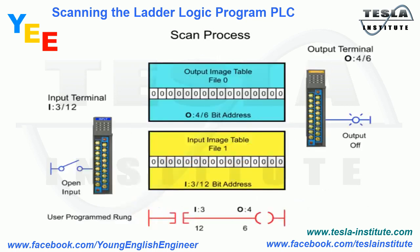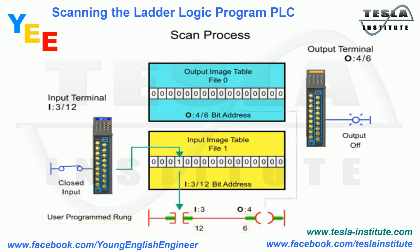The entire scan process is demonstrated further here. When the limit switch is activated, the input module detects a voltage and an ON condition is updated in the input table with a value of 1. During the Execute Program step, the PLC sets the input and output instructions ON. The output status is updated with the light changing state from OFF to ON as defined in the Ladder Logic.